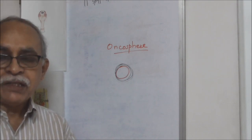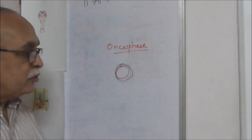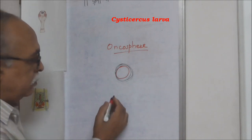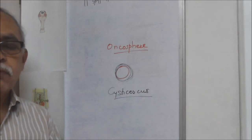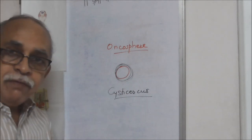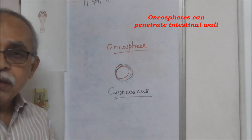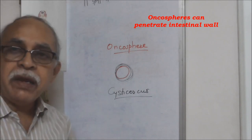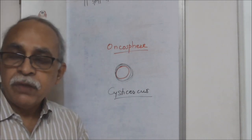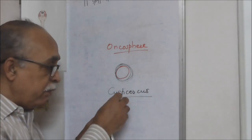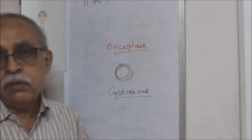In humans, they can pass through the feco-oral route — through contaminated food or water. Inside the alimentary tract, passing through the esophagus and stomach, the protective cyst layer may break open and a tiny larva comes out, called a cysticercus. Sometimes the oncosphere directly enters the intestine, penetrates the intestinal wall, gets into the bloodstream, and can be carried to different parts of the body.